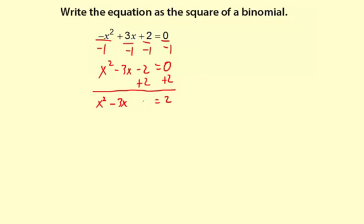And we need to figure out what c term or what missing term here will give a perfect square. And what we do is we take this negative 3 divided by 2 and then square it.